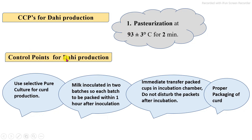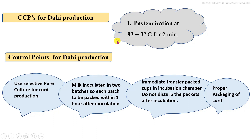Other control points include: using proper selective pure culture for curd production in order to avoid spoilage. Incubation should be done in two batches so that each batch is packed within one hour after inoculation — meaning immediately after inoculation of the culture, packaging must be carried out. After incubation, do not disturb the packets. The last point is that a proper packaging system — cup packaging or packet packaging — must be used. These are the minimum control points required to control in curd production.